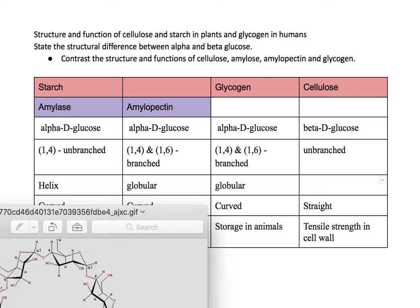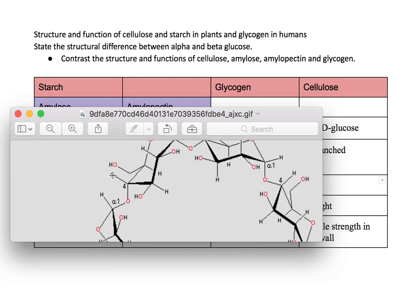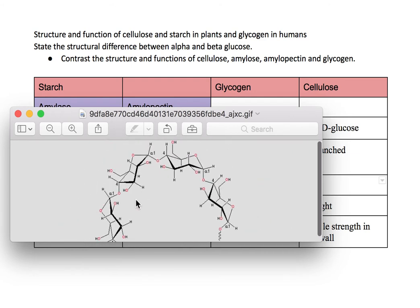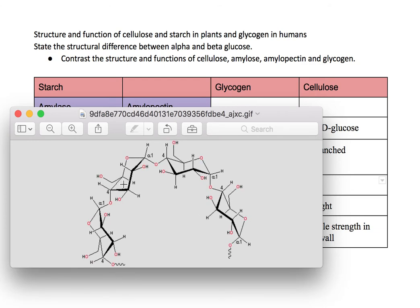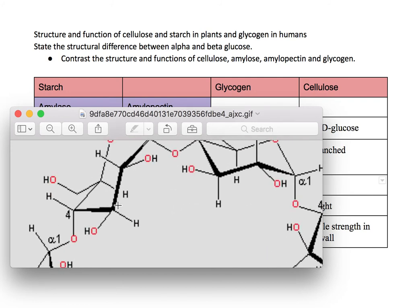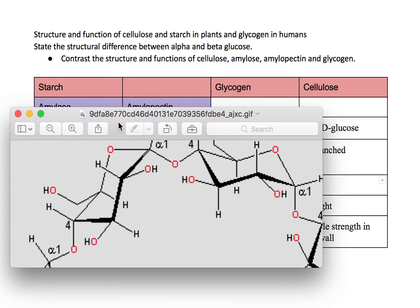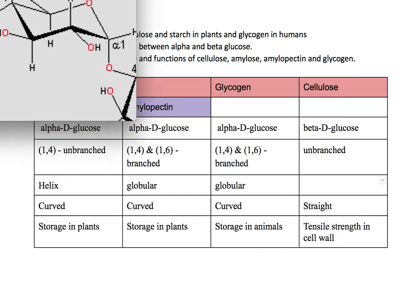They look like this — curved — because the glycosidic linkage is only on one side. The whole structure is bent because each glucose is leaning towards its glycosidic linkage, and together they make a very curved structure. This is because the glucose is alpha-D, not beta-D — we'll go into the details later.